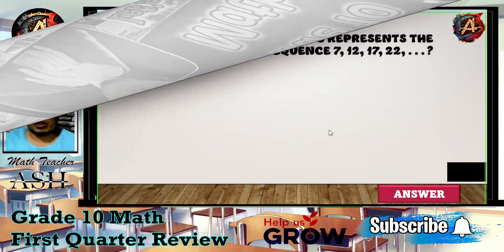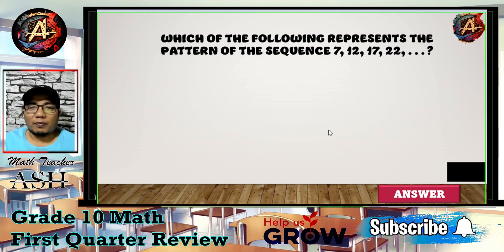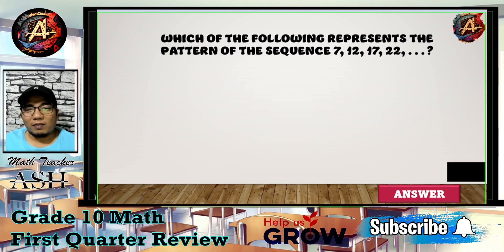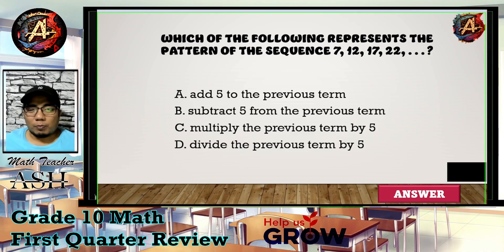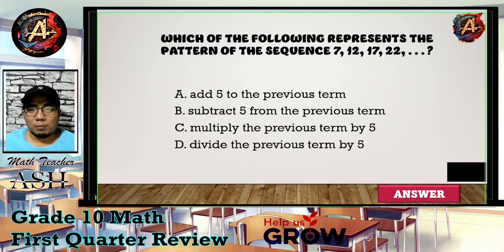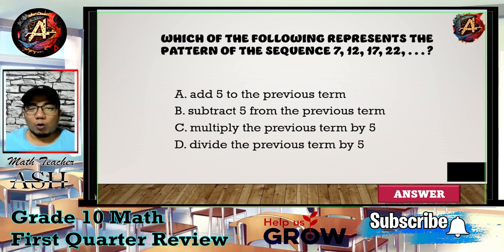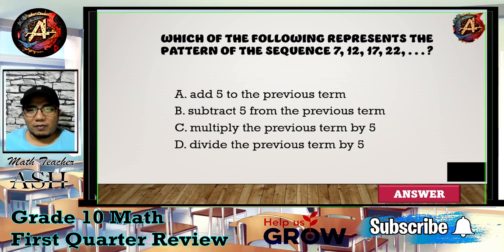Question number one: Which of the following represents the pattern of the sequence 7, 12, 17, 22, and so on? Is it A) add 5 to the previous term, B) subtract 5 from the previous term, C) multiply the previous term by 5, or D) divide the previous term by 5? I'll give you 5 seconds to think about your answer.